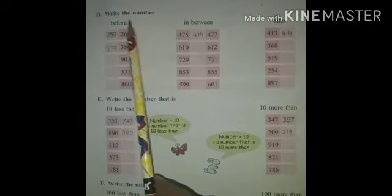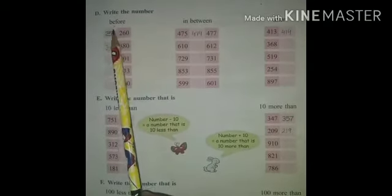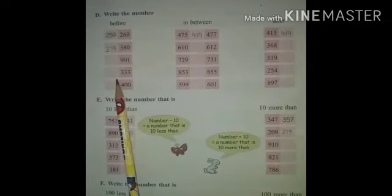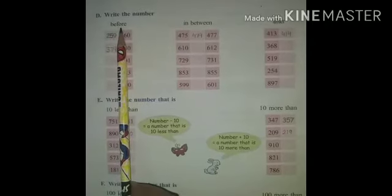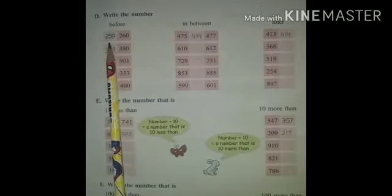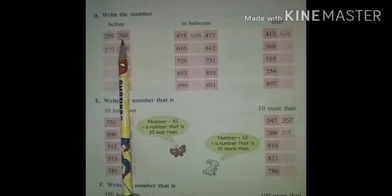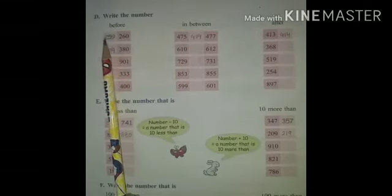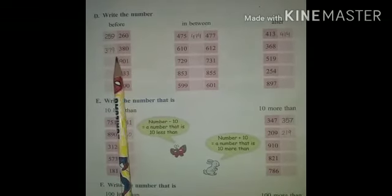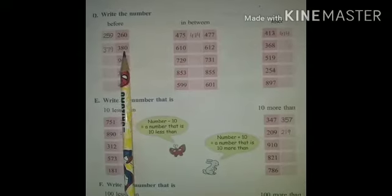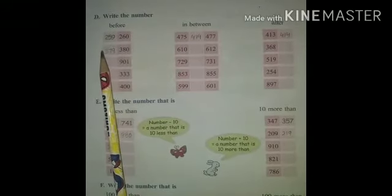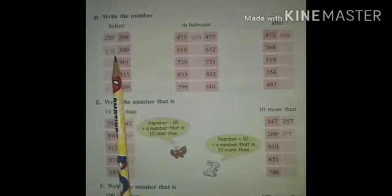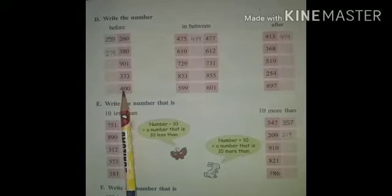Next, Point D — write the number. Here we have Before, In Between, and After. First we will solve Before. Before means the number that comes just before any given number. The question is 260 — what number comes before 260? It is 259. Next question: 380 — what number comes before 380? It is 379.